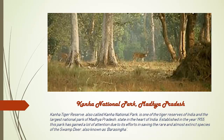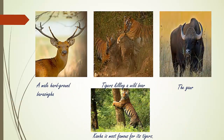Kanha National Park from Madhya Pradesh. Kanha National Park is also called Kanha Tiger Reserve. It is one of the premier tiger reserves of India and also the largest national park of Madhya Pradesh. This park was established in the year 1955. Examples of wildlife include the male hard-ground Barasingha, tiger hunting a wild boar, and Gaur, also called Bison.